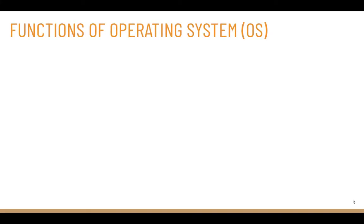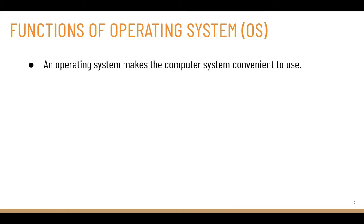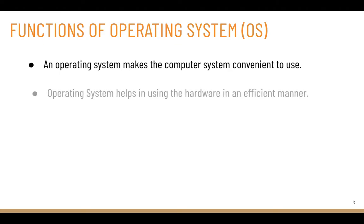Let's see the different functions of an operating system. The first function is that an operating system makes the computer system convenient to use. Next, the operating system helps in using the hardware in an efficient manner. For example, if you have an expensive computer with Intel Core i7, 16 gigabytes of RAM, and 1 terabyte of storage, but the operating system is not good, you cannot use the hardware efficiently.